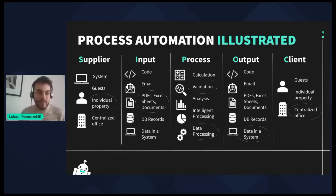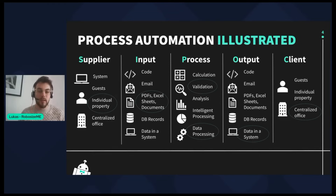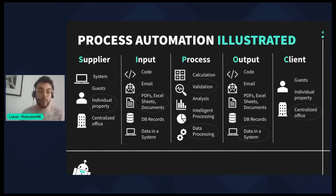As a very generic example, I've circled a few of these icons on screen. These demonstrate, in our case, individual properties sending PDFs with data that needs to be processed and input into a system for a centralized office to further work with.